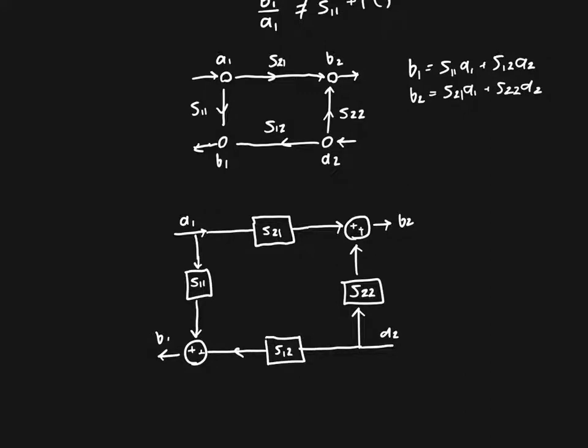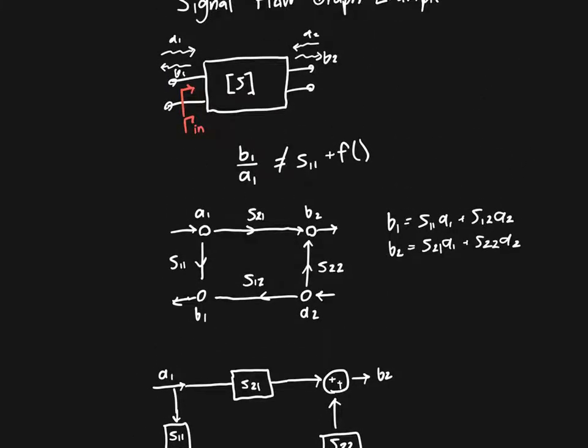Now, with just this block diagram, we cannot really do anything further. And that's because I've forgotten the most important part of this. And that's that we are going to connect this two-port network to a load, some ZL. Because without connecting it to a load, we can't move any further.